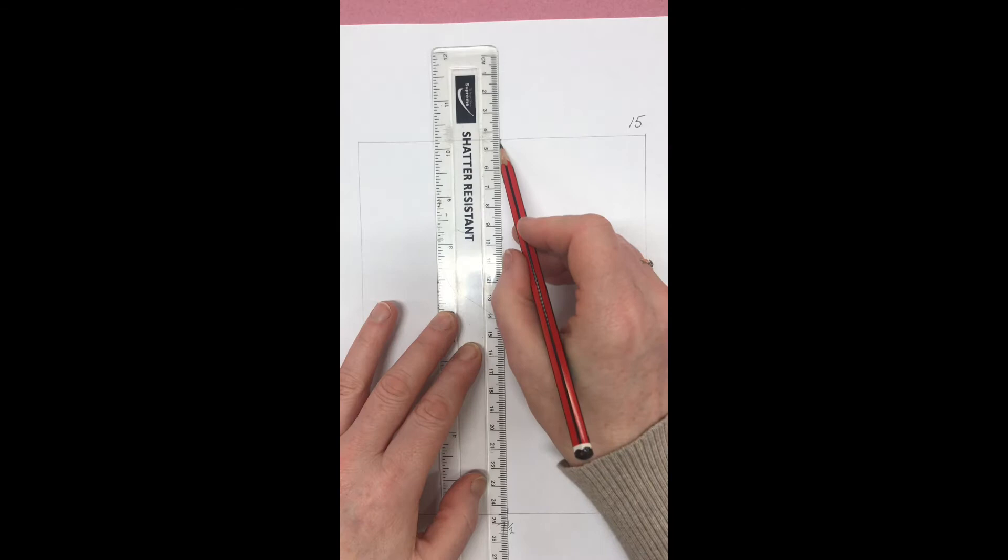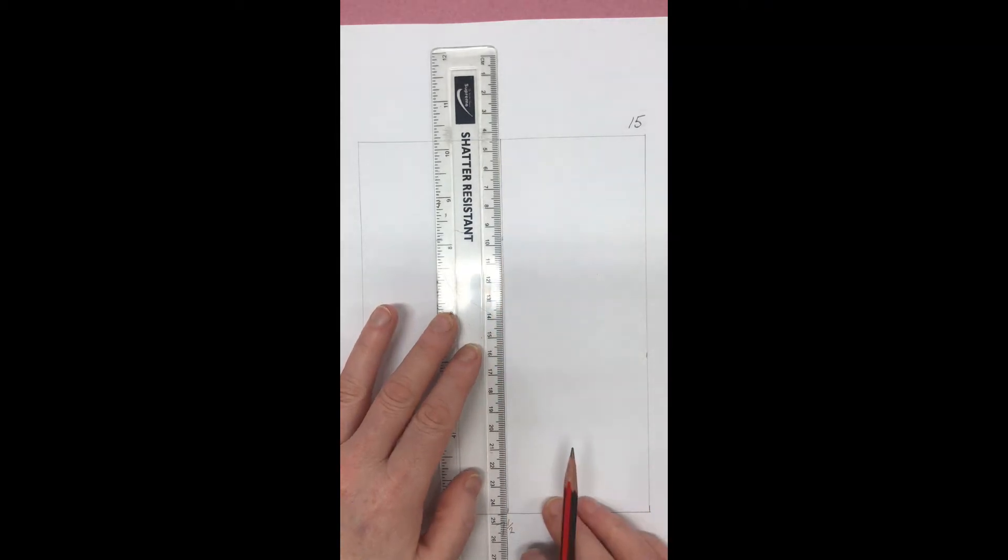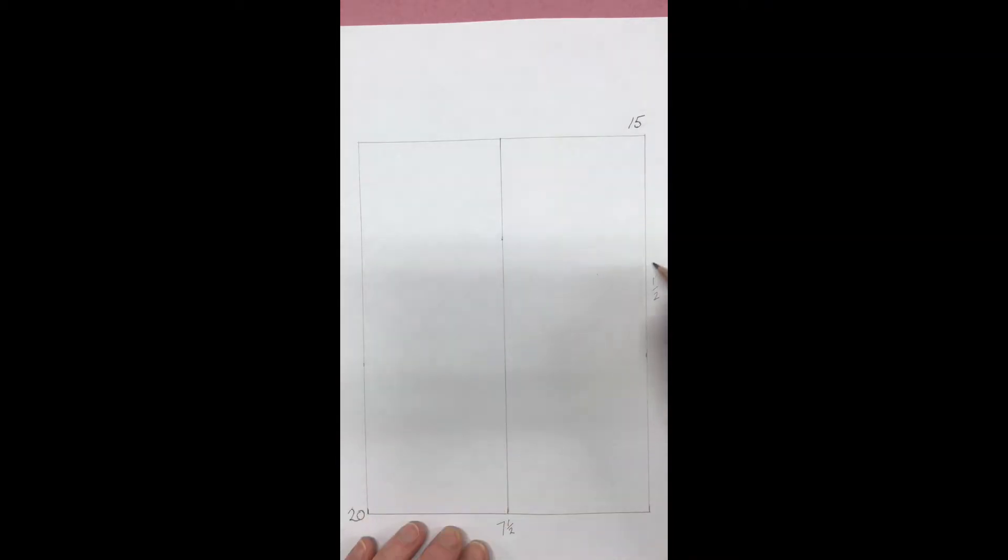To start this task, draw a box 15 across by 20 high. You want to draw a line down the middle of the box. This is at seven and a half centimeters. Next, you want to draw a line across the middle of the box. This is at 10 centimeters.